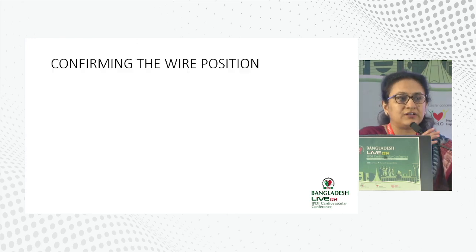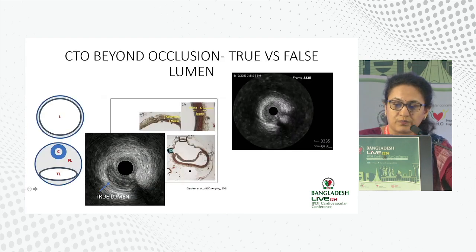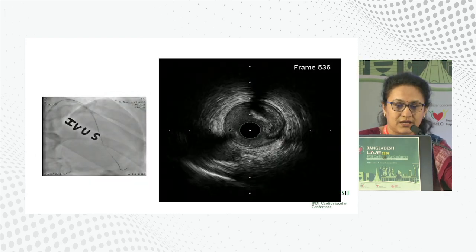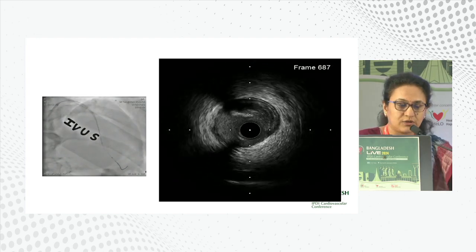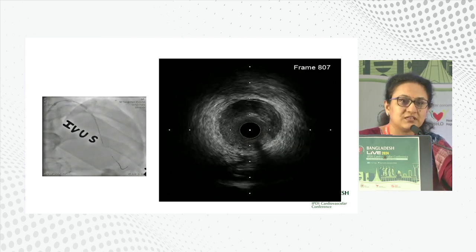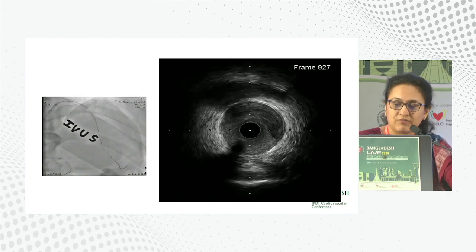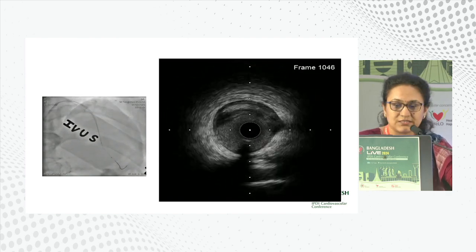The second most important pre-assessment use is confirming wire position, especially in CTOs. If the CTO is beyond the occlusion, we need to find whether the wire is in the true or false lumen. In this case, the wire was assumed to be correctly placed, but the IVUS pullback clearly showed the IVUS was in the false lumen. The true lumen was kidney-shaped, present from 11 o'clock to 2 o'clock position. Always avoid stenting in these cases.